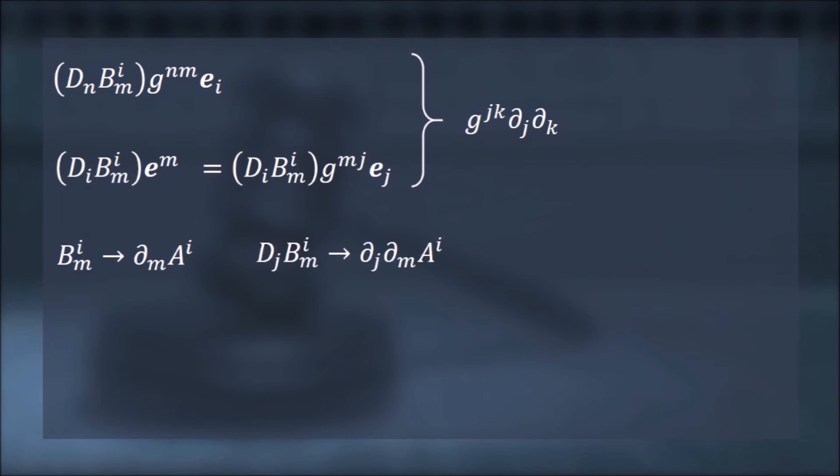So, the first possibility reduces to this, which is exactly what it should be. The second possibility reduces to this, which is not at all what it should be. So, we have our answer.